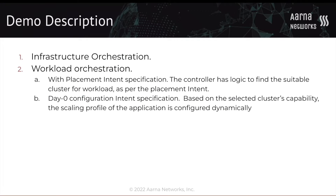In this demonstration, we are going to create infrastructure using the Nafio platform. The infrastructure we are going to create is an EKS cluster, and we are going to use the AWS Controller for Kubernetes for that. We have created a KPT package which consists of KRMs defining the AWS resources. Following the infrastructure, we are going to demonstrate workload orchestration using a simple application called the caching DNS application. We will show the placement intent as well as the day-zero configuration intent.